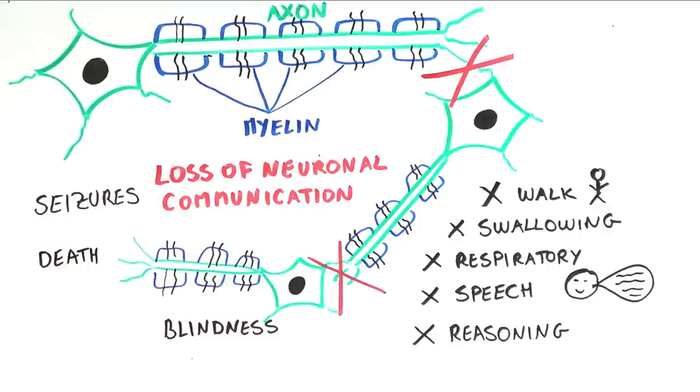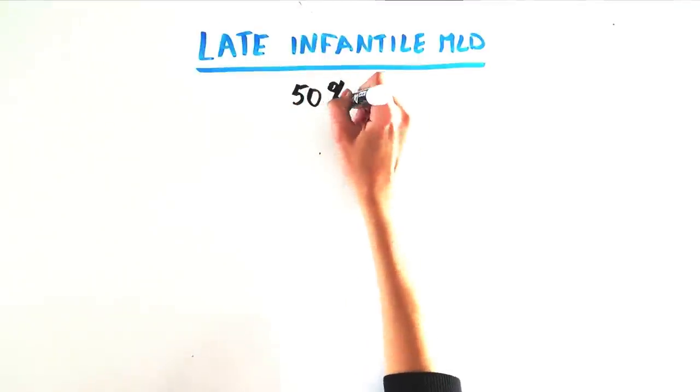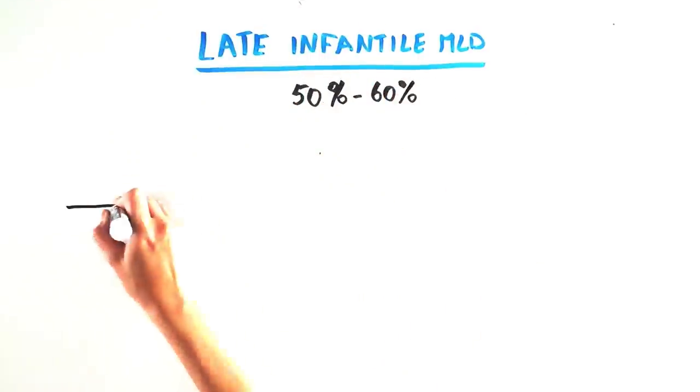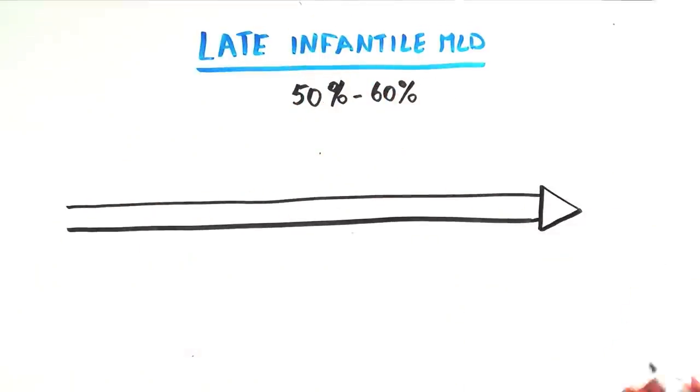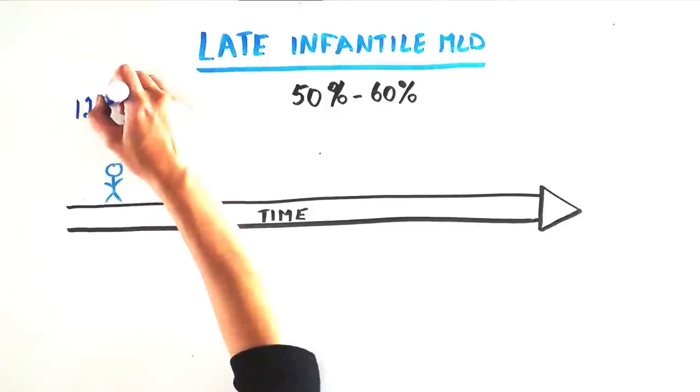There are three different clinical forms of MLD. Late infantile MLD represents 50-60% of cases, with first symptoms between the ages of 12 and 24 months.